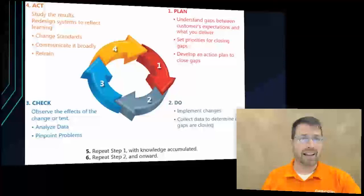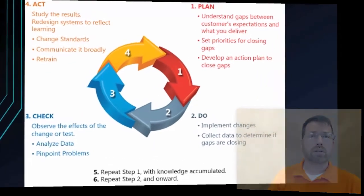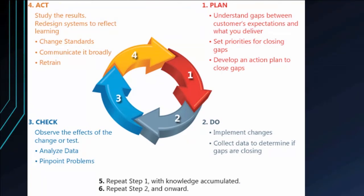Another framework is ISO 27000 — the International Organization for Standardization. They have a great model called the Plan-Do-Check-Act cycle. Starting in the planning phase, notice there's no end to it, just like the security policy lifecycle. In the planning phase we try to understand what gaps there are and what we need to do to close them. In the 'Do' phase, we implement the changes and collect data. In 'Check,' we check to see the impact and find any issues with the policy. In 'Act,' we change, update, and study those results. Then we're right back to step one — it's a never-ending cycle of Plan, Do, Check, Act.